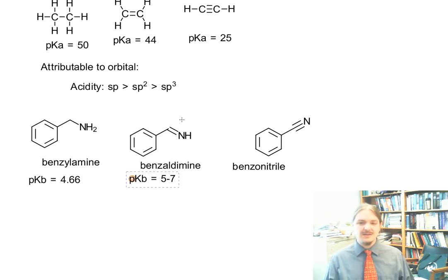You notice this is similar, actually, to the pKb of pyridine, which has a similar sp² hybridized structure. And then there is benzonitrile.